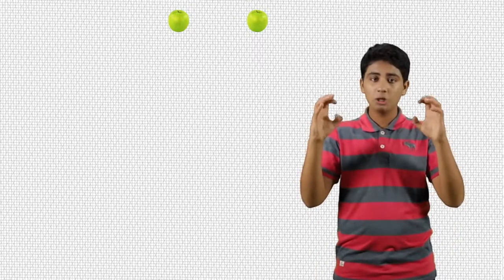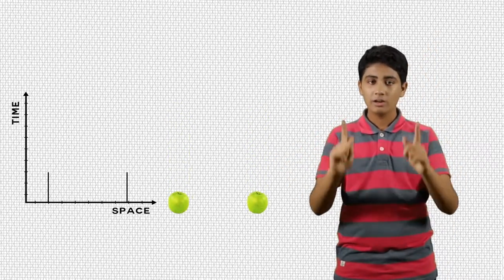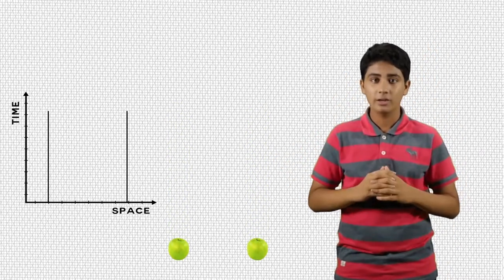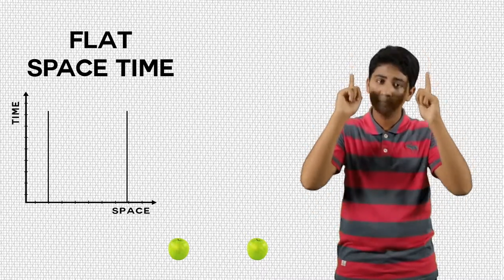Take two apples which are moving down parallel to each other. If we plot their position with respect to time, we will get two parallel trajectories which never meet. This is called a flat space-time as two parallel lines stay parallel.